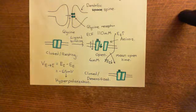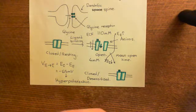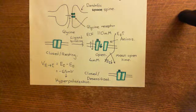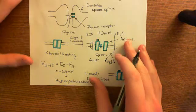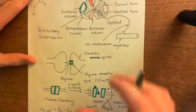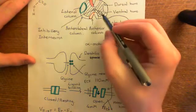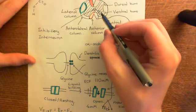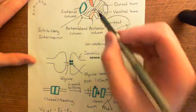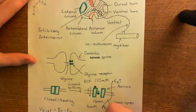When you hyperpolarize a cell, that's the exact opposite of what you need to do in order to cause the cell to actually fire an action potential. If you want this alpha motor neuron to fire an action potential, you need to depolarize the electrical potential, not hyperpolarize it.